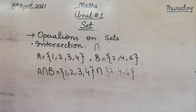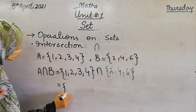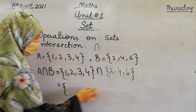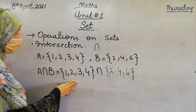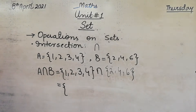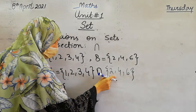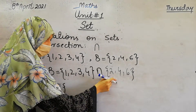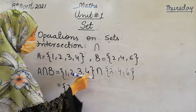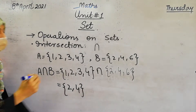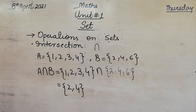Now we will explain what we do in intersection. In union, we took all elements of both sets: 1, 2, 3, 4, and 6. In intersection, we take the same elements — the elements that appear in both sets. Is 2 present in both sets? Yes. Is 3 present? No. Is 4 also present in both sets? Yes. So 2 and 4 is the intersection of A and B.